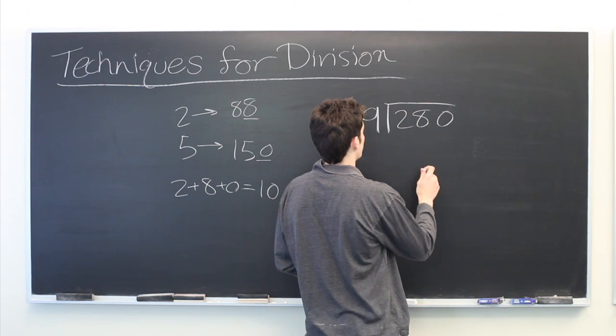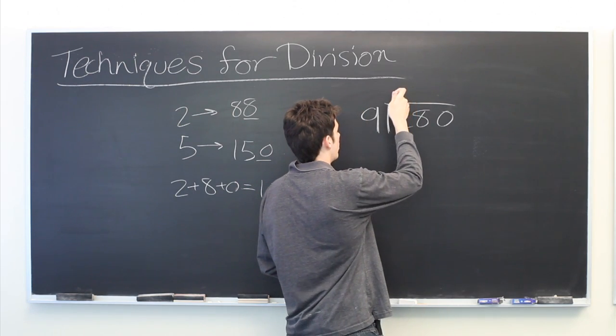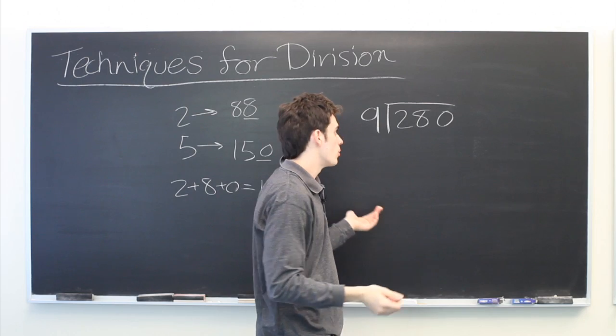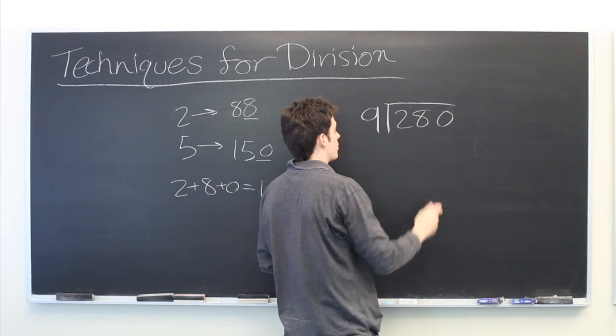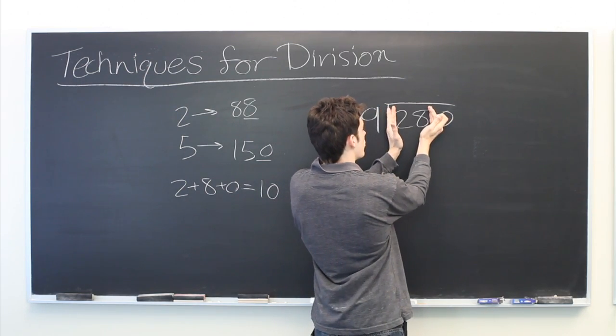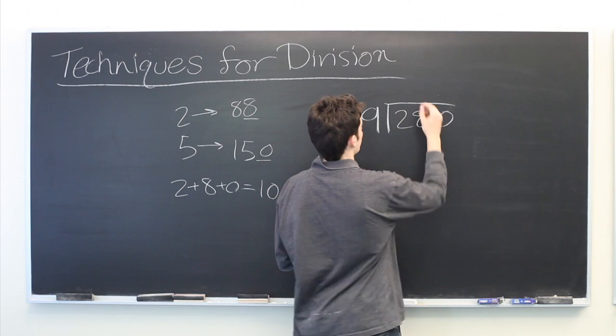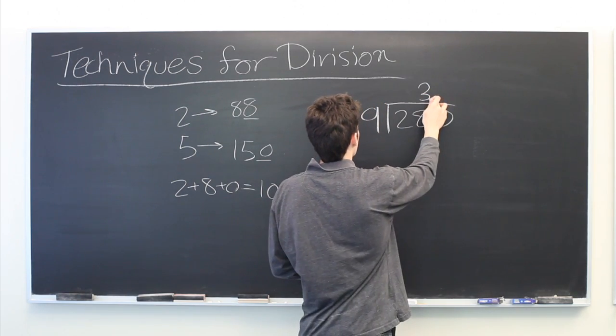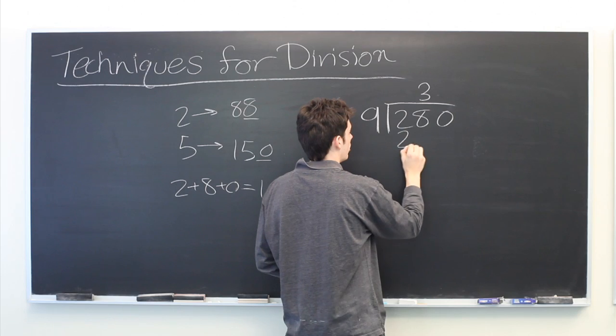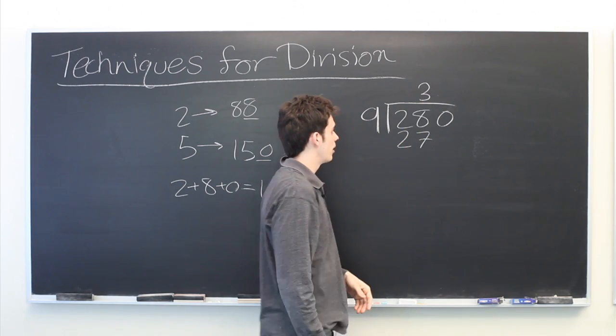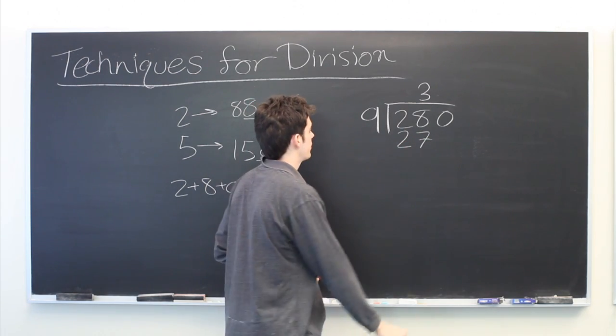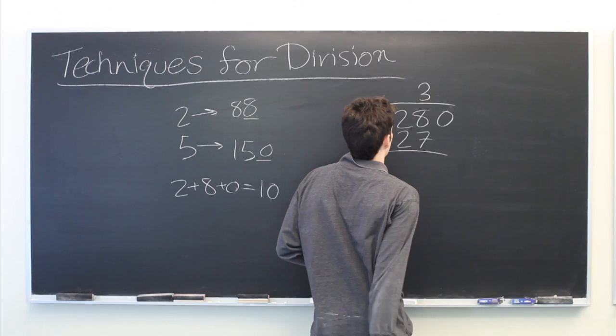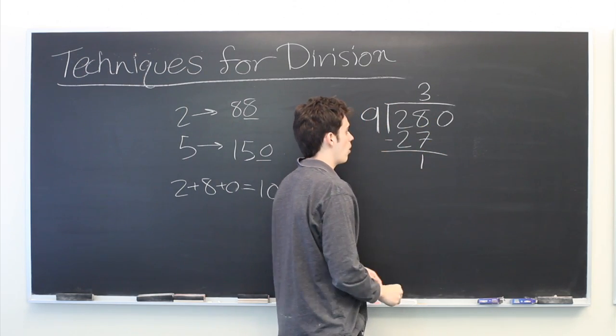So first what we want to do is ask, how many times does 9 go into 2? Well, it doesn't go into 2. So we'll skip over to the next one. How many times does 9 go into 28? The answer is 3. So we'll multiply 3 by 9. Write 27 down here to figure out what's left over. 28 minus 27 is 1.